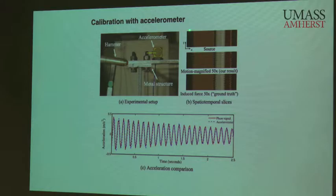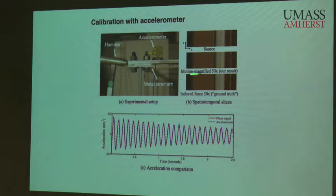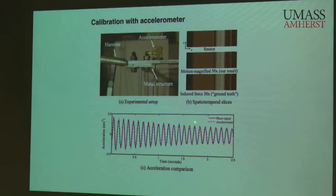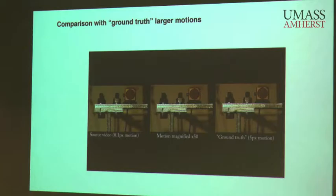That gives us ground truth motion magnification. We compare the computationally motion-magnified version (50× exaggeration) with the physically 50× harder tap. In a space-time plot of a line in the video, the lightly tapped version shows straight vertical lines, the ground truth shows the structure wiggling, and the computationally magnified version is in reasonable agreement. The accelerometer output plotted as a dotted blue line and the measured displacement in red are also in good agreement, confirming the approach is quantitatively accurate.